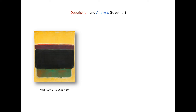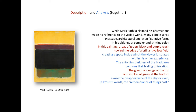Description and Analysis – While Mark Rothko claimed his abstractions made no reference to the visible world, many people sense landscape, architectural, and even figurative forms in his oblongs of complex and shifting color. In this painting, areas of green, black, and purple reach toward the edge of a brilliant yellow field, creating a space inside which the viewer is isolated within his or her experience. The enfolding darkness of the black area confirms that feeling of isolation.